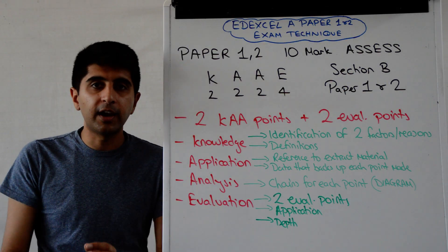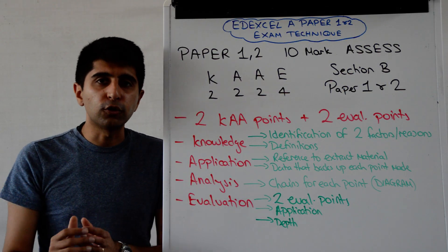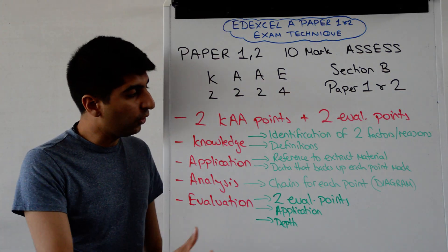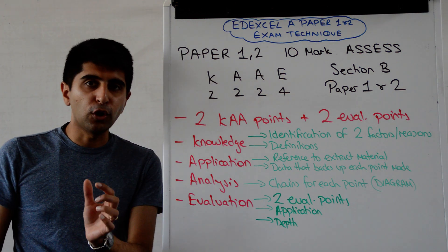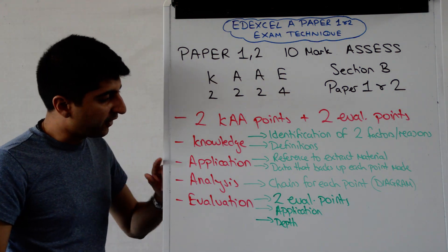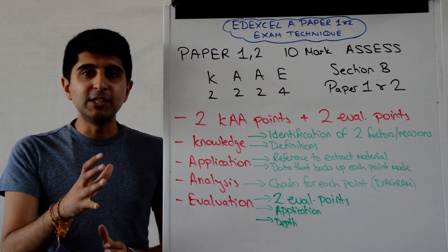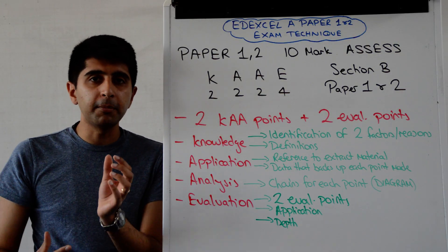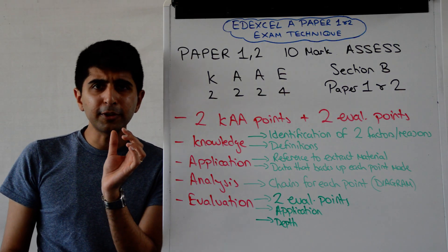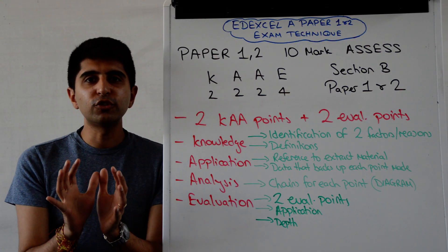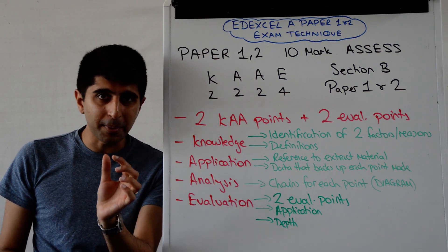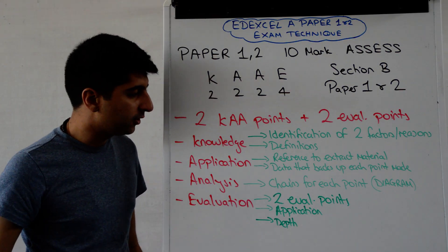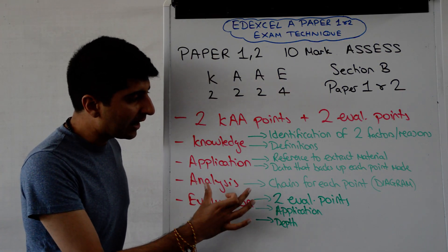For knowledge marks, you need to identify two factors or two reasons — very simple if that's what the question is asking. If not, definitions are another simple way to get your knowledge marks. For application, use the extract material — quote something from it or use something from it. Just make sure that whatever you use from the extract explicitly backs up the point you're trying to make, and then you get the application marks.